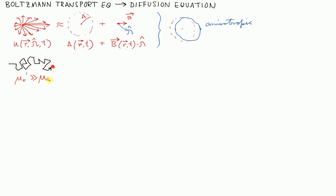Another way you could write that is mu_A divided by mu_S prime is much, much less than one. Or you could say that the albedo, that's a term that comes up in the book. The albedo,